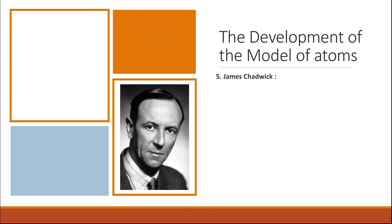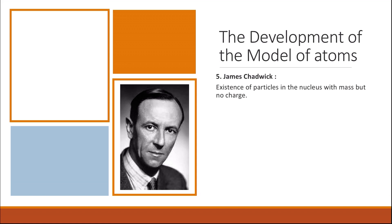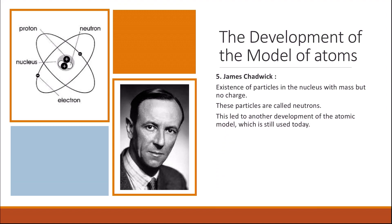Finally, we have James Chadwick, the scientist who suggested the model of an atom that is now widely used and accepted. He was the first scientist to describe the existence of uncharged particles in the nucleus. In his model, he suggested that the nucleus has two types of particles: protons, and neutrons, which are neutral particles that have mass. Electrons orbit the nucleus.